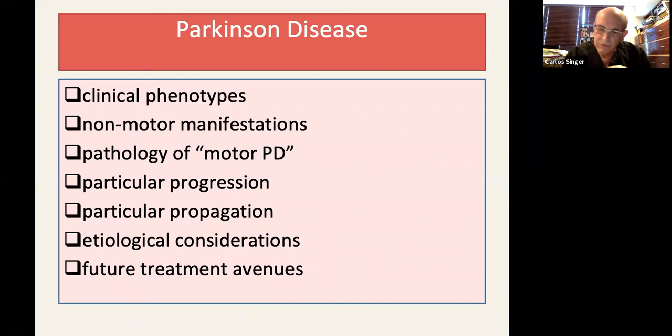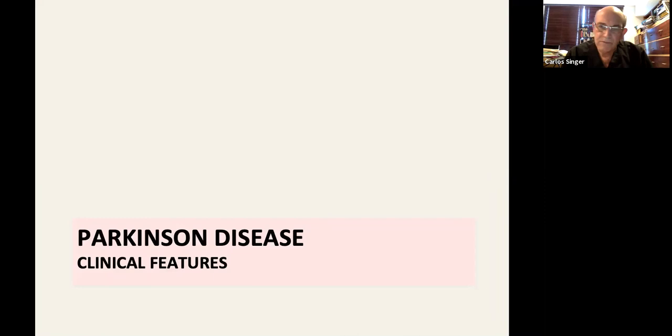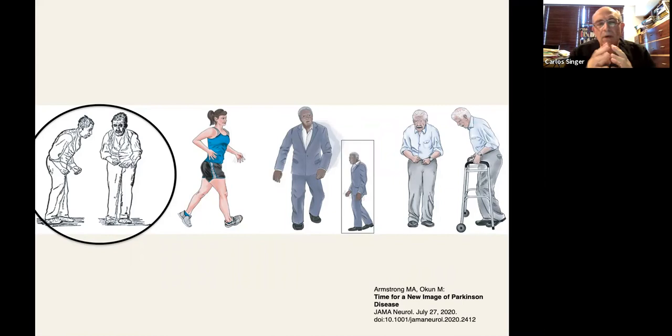So let's go over the clinical features. On the left, you see one of the most frequently shown illustrations, sometimes the actual photograph, of an individual with Parkinson's disease. This appeared in 1886 in the treatise on diseases of the nervous system by Sir William Gowers.